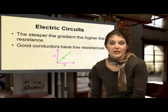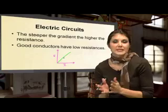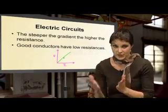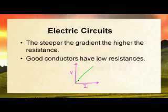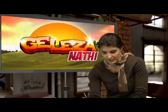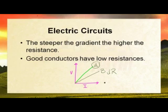Now let's look at when we see something as having high or low resistance. Should you have two graphs — let's call them A and B — if something has a high resistance it will mean a steeper gradient. So A will have a higher resistance, B will have a lower resistance, and if it has a lower resistance it will be seen as a better conductor.